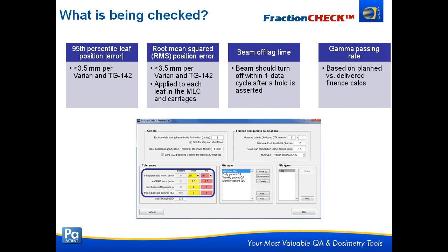When we load these files, what parameters are we actually checking? We're looking at the 95th percentile error in leaf positions — this should be less than 3.5 mm per Varian and also AAPM's TG142, though we've found we can get a better tolerance around 1 mm for a lot of treatments. We can also look at the RMS error in leaf positions, which Varian and TG142 say should be less than 3.5 mm. One unique thing about FractionCheck is it calculates BMO flag time — when the beam shuts off, the Varian log files record when the beam hold is asserted, and we can time how long it took from that assertion to when the beam was actually shut off.